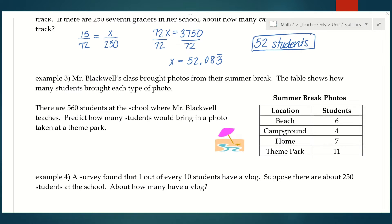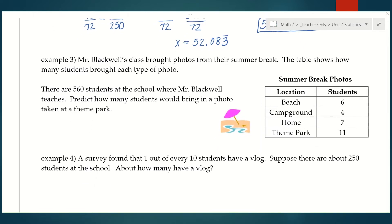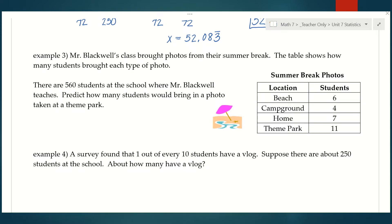If you look at the table, it says summer break photos. We have location and number of students for each. It looks like most people brought in pictures from a theme park, and the least would have been from a campground. There's 560 students at the school where Mr. Blackwell teaches. Predict how many students would bring in a photo taken at a theme park. The first thing we want to figure out is how many people in the survey brought in theme park pictures. We can see that right in the table, that's 11.